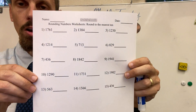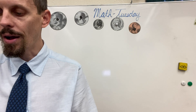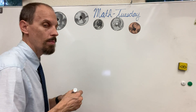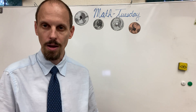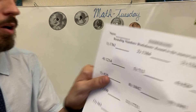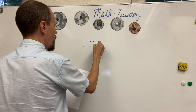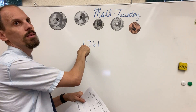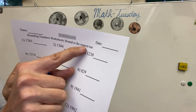Now some of you called me and asked me for help with this, and it's very, very simple. We're still going to be rounding to the nearest 10. Remember, we have to have our place value, which we'll also get into tomorrow. But let's look at number one: 1,761. We have our ones place, tens place, hundreds place, thousands place. What are we rounding to? Notice this says round to the nearest 10.